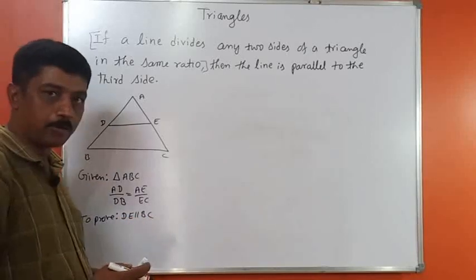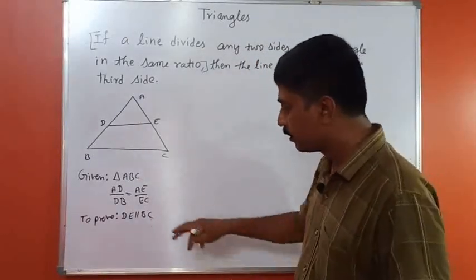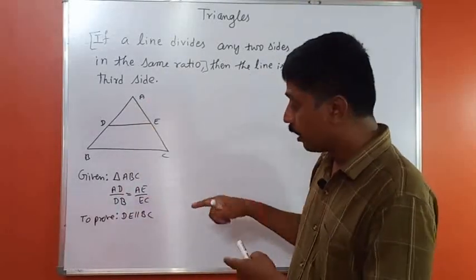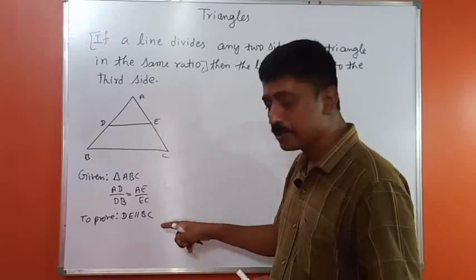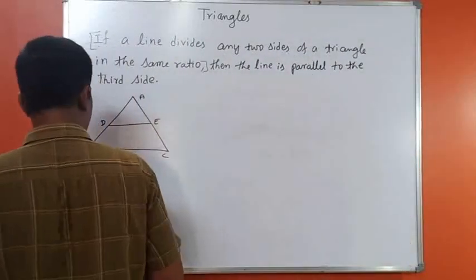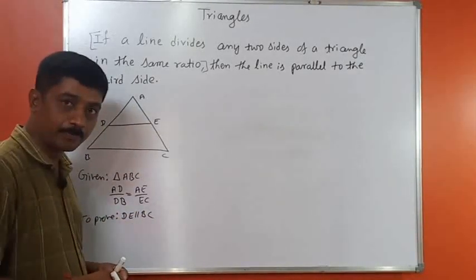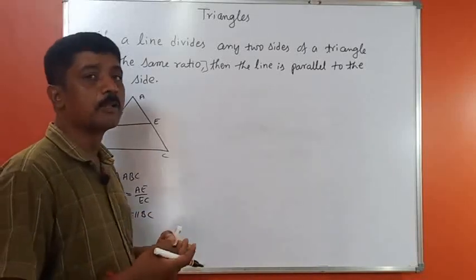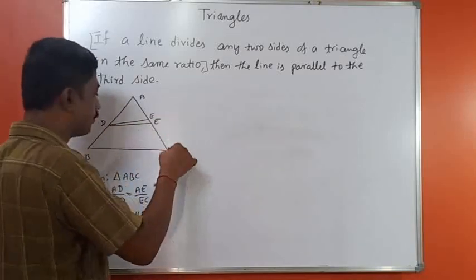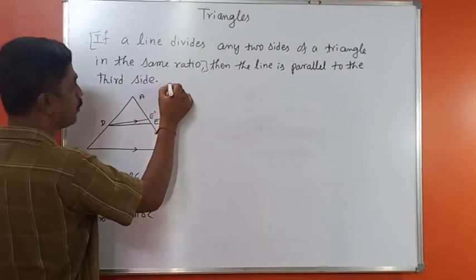What you are supposed to prove: DE is parallel to BC. Compare this with BPT — in BPT, DE was parallel to BC, and therefore the line divided the two sides in this ratio. Since we need to prove the opposite, we go to the assumption method: if DE is not parallel to BC, let us assume there is some other line DE' that is parallel to BC.